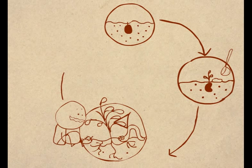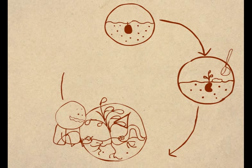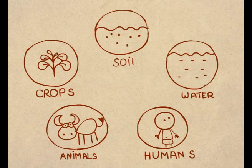So this cycle of self-destruction affects the soil, water, humans, animals, crops all in a negative way.